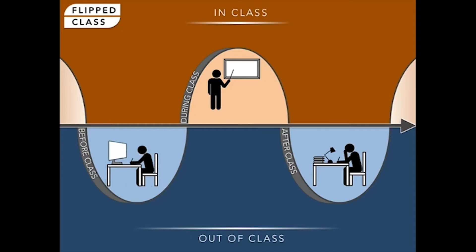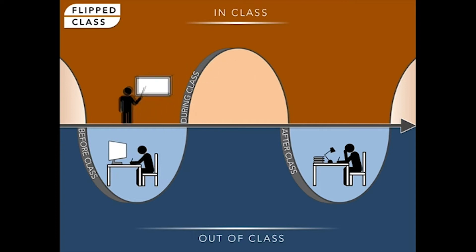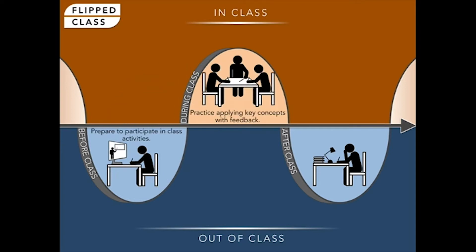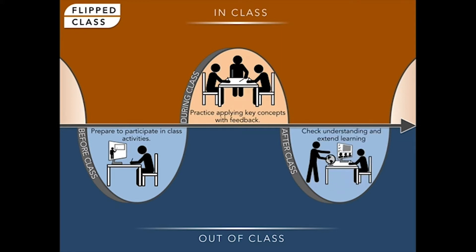In a flipped classroom, students are provided online videos explaining the content to view at home. Then, class time is dedicated to the teacher working individually or in small groups with students, along with learning activities that bolster the student's understanding of the content they received before coming to class — thus flipping the traditional order of instruction.